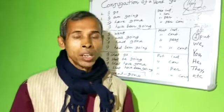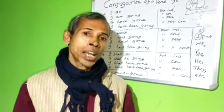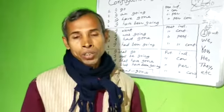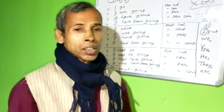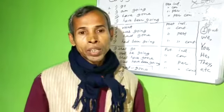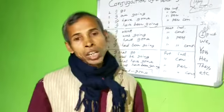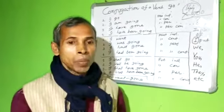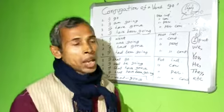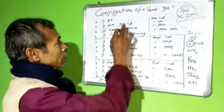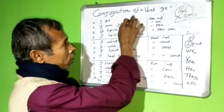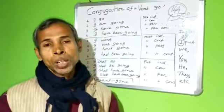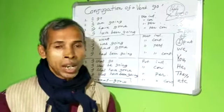I felt insulted at that time, but today I realize that insult was a blessing in disguise in my life. I have been encouraging students to learn more verbs, and with one verb, make so many sentences. In English grammar, this is called conjugation of verbs — without learning conjugation, nobody can learn written English or spoken English.